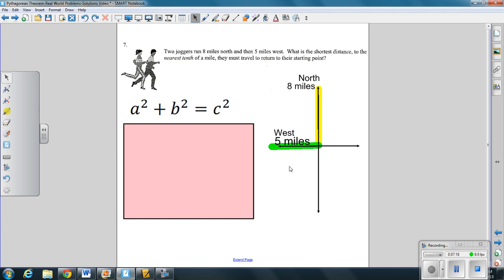Two joggers are running 8 miles north and 5 miles west. If you notice, I drew a picture and I highlighted it red and green. I just drew a coordinate plane. Here is north up on top. And here is west to the left in green. So starting from the center, I went up north. I went up north and then I went west 5 miles. So I have north 8 miles and west 5 miles. What is the shortest distance to the nearest tenth of a mile that you must travel to return back to this starting point or the origin?